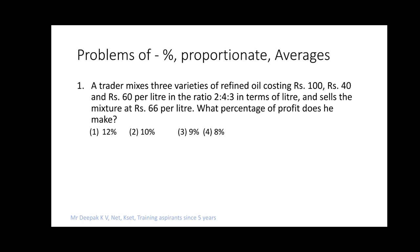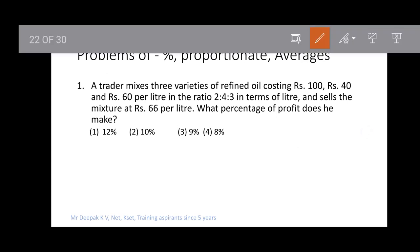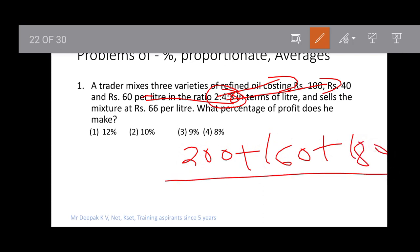We need to find the percentage of profit. I'll find the average cost per liter of the mixture. It's mixed in the ratio 2:4:3, so 2×100 + 4×40 + 3×60 = 200 + 160 + 180 = 540. Divided by the total ratio 2+4+3 = 9.